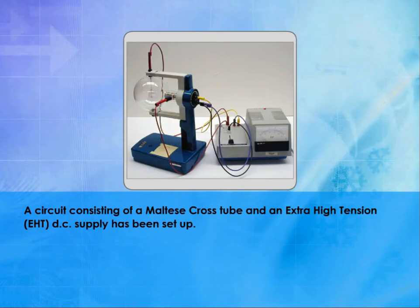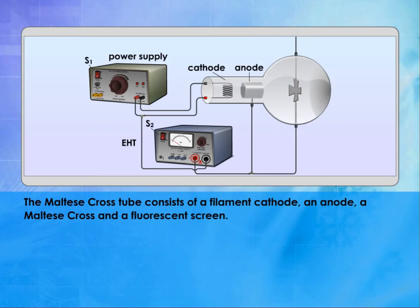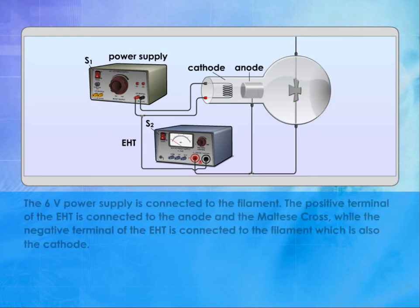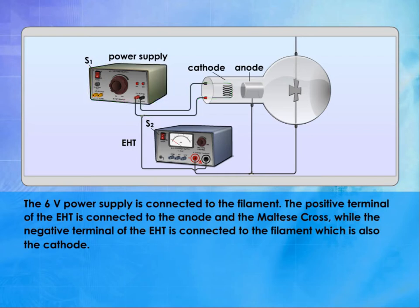The circuit consisting of a Maltese cross tube and an extra-high tension EHT DC supply has been set up. The Maltese cross tube consists of a filament cathode, an anode, a Maltese cross, and a fluorescent screen. The 6-volt power supply is connected to the filament. The positive terminal of the EHT is connected to the anode and the Maltese cross, while the negative terminal of the EHT is connected to the filament, which is also the cathode.